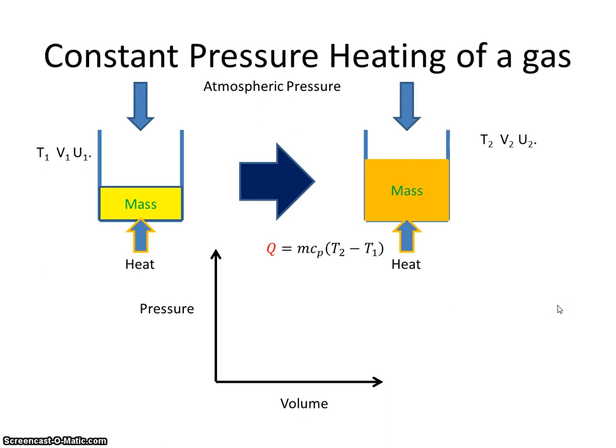If we look at it on a PV diagram, there's the first volume, there's the second volume, pressure is constant. So the work done is the area under that graph. And why is that?